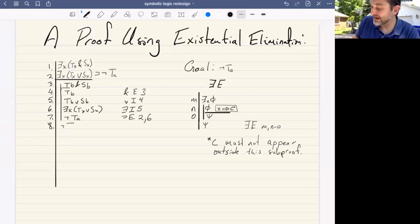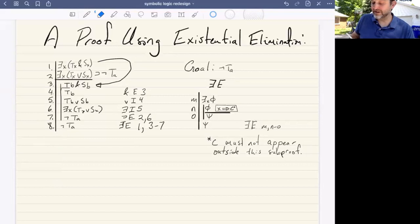existential elimination from our existential statement we're eliminating here is step one. We know that because that's the one that we end up replacing the variables with constants with at step three. So we're going to say one and then our subproof here, which is step three through seven.